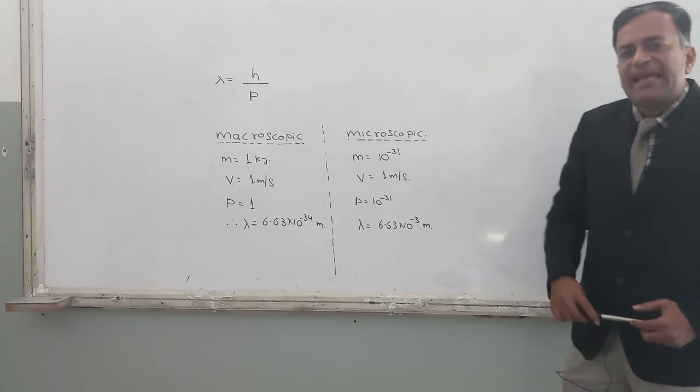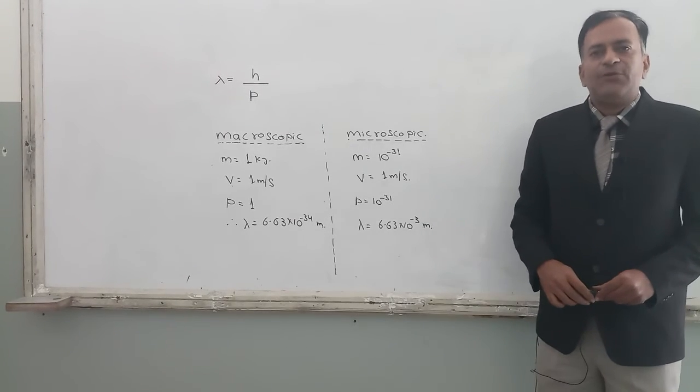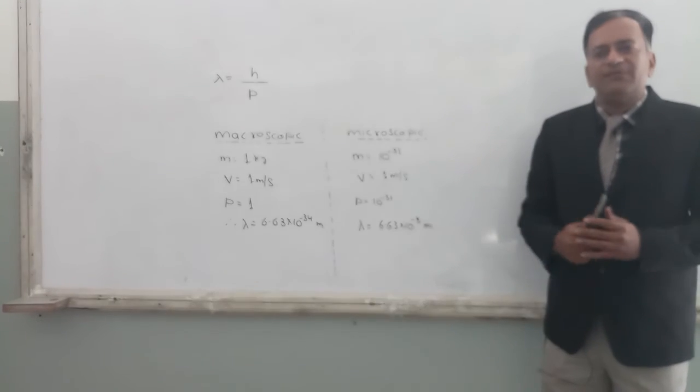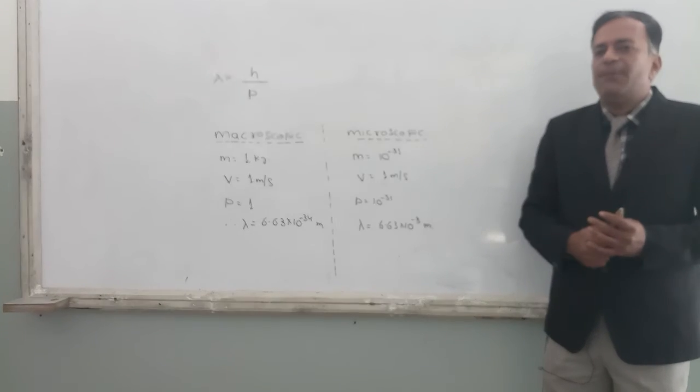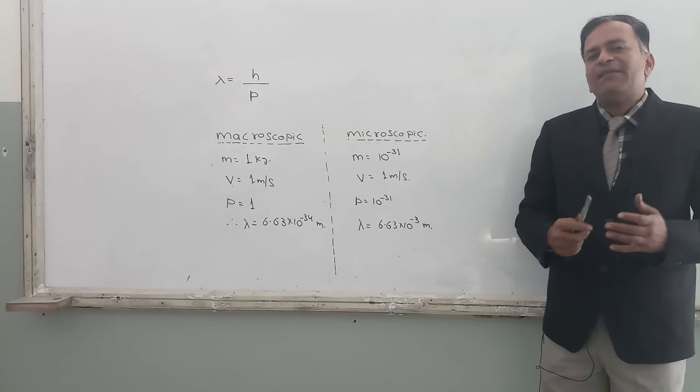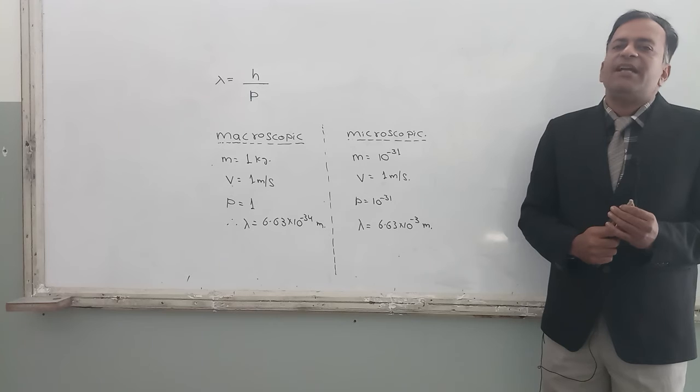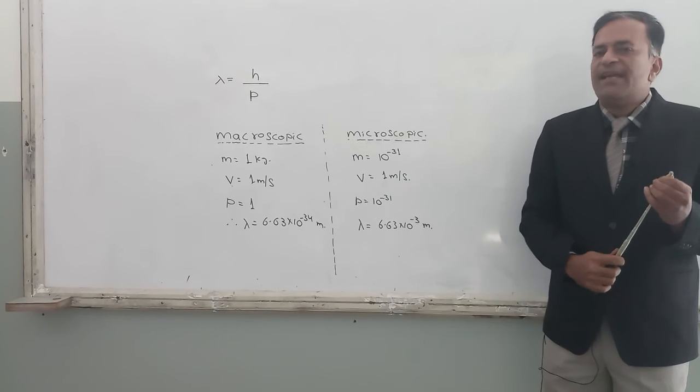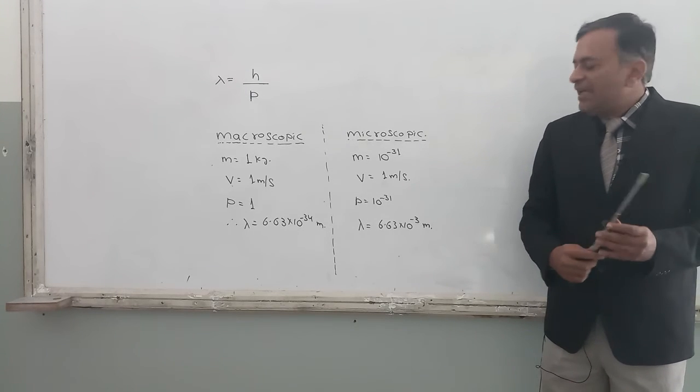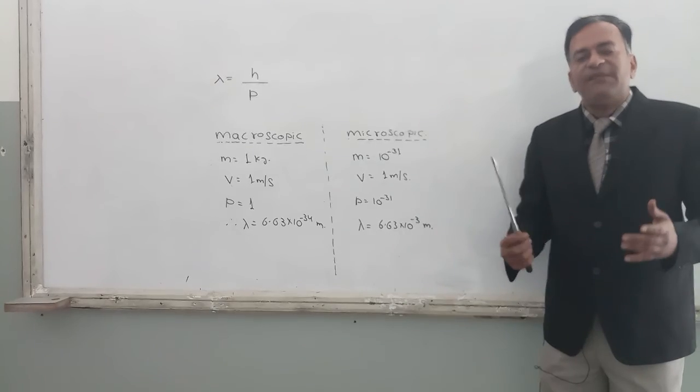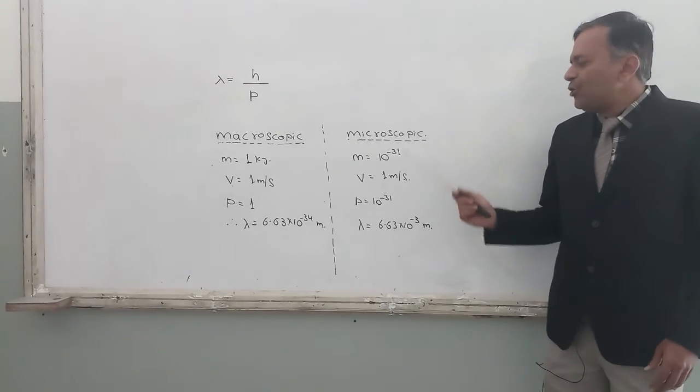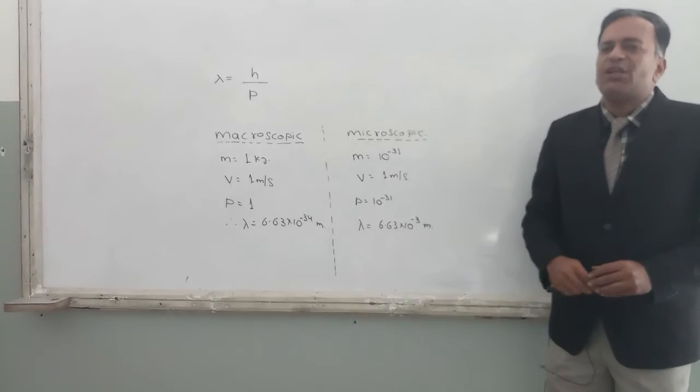And it can be observed, not by us but it can be observed by simple experiments, by the same method which we use to detect interference and diffraction of the waves. Can we measure or can we find this wavelength from interference and diffraction? Yes, for microscopic particles it is quite possible.